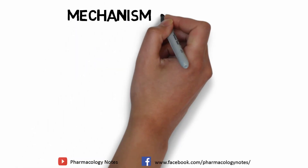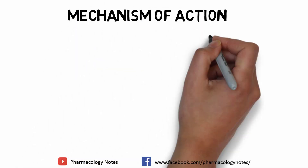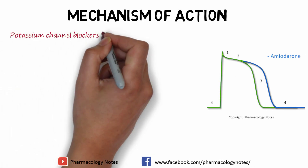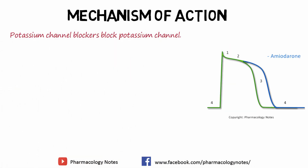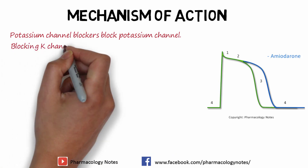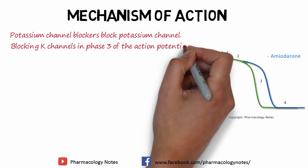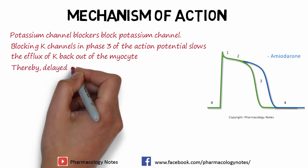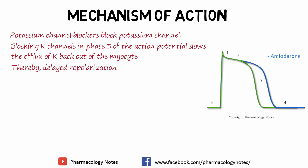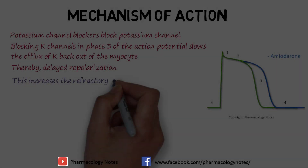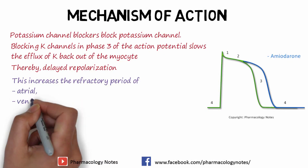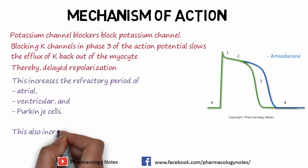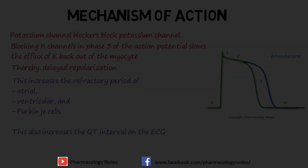Potassium channel blockers work on the action potential. Regarding the mechanism of action: potassium channel blockers block the potassium channel in phase 3 of the action potential, slowing the efflux of potassium out of the myocytes in the cardiac tissue, thereby delaying repolarization. This increases the refractory period of atrial, ventricular, and Purkinje cells.